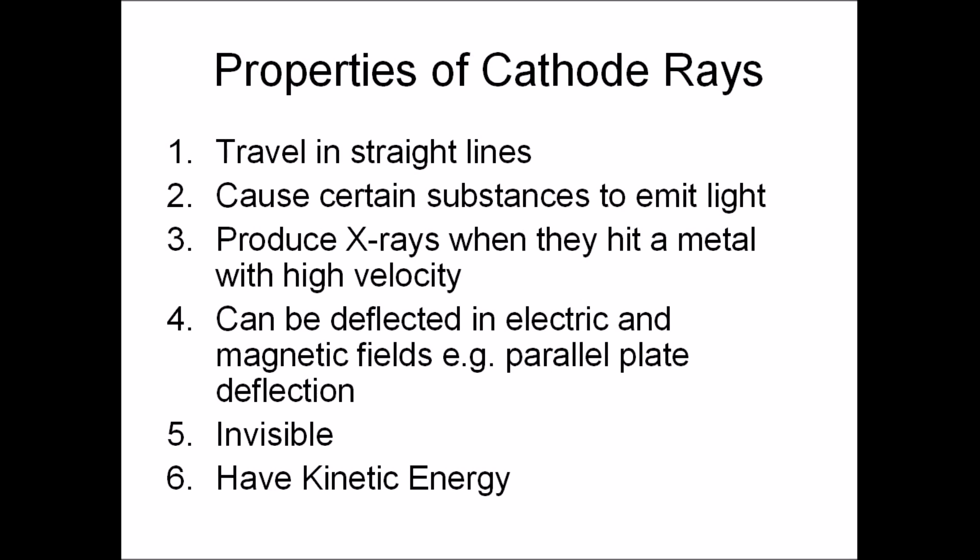The properties of cathode rays: they travel in straight lines, cause certain things to emit light which is called scintillation, produce high electromagnetic radiation called x-rays when they hit a metal with a high velocity.